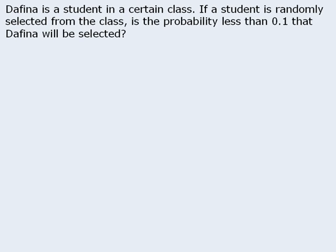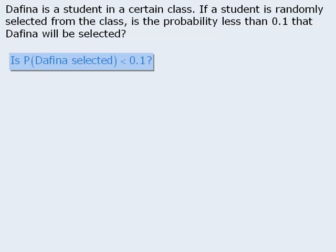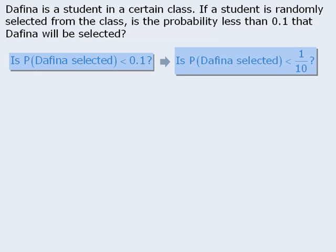In this example, Daphina is a student in a class. One student is selected from the class, and we want to determine whether the probability is less than 0.1 that Daphina is selected. We could write the target question as: is the probability less than 0.1, or equivalently, less than one-tenth? What would need to happen for the probability to equal 0.1? There would need to be exactly 10 students in the class. So in order for the probability to be less than 0.1, there would need to be more than 10 students. Another way to phrase the question is: is the class size greater than 10?